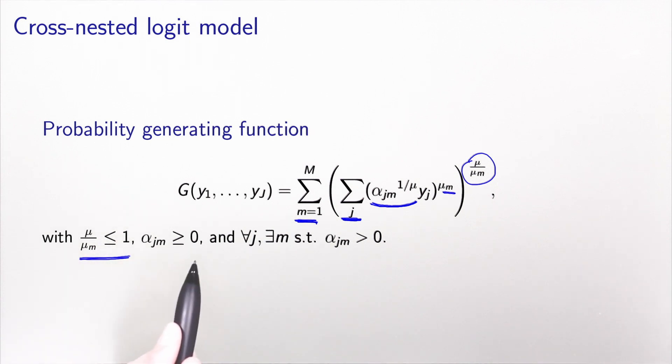And as we discussed, the membership parameters must be non-zero. And for each alternative, there must be at least one nest such that the parameter is non-zero. And we can prove that this probability-generating function, as we define it here, complies with the MEV framework. And therefore, can be used to derive a valid choice model, which is the cross-nested logit model.